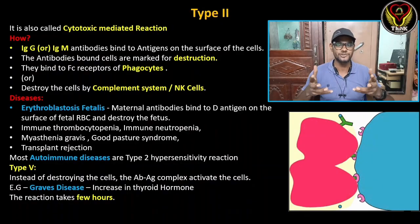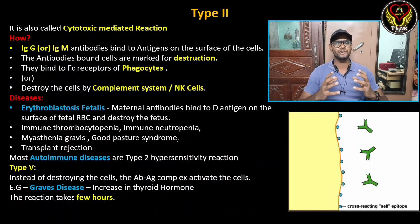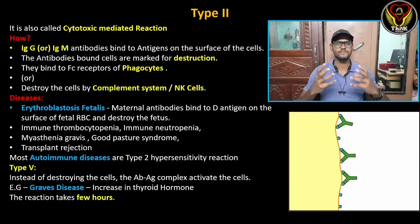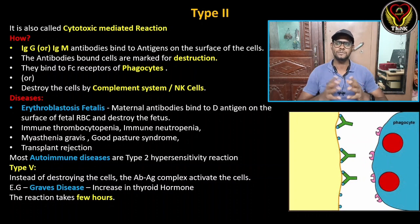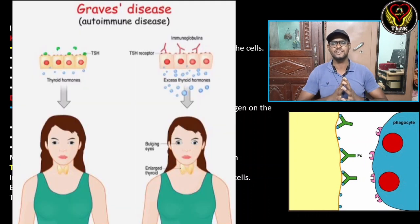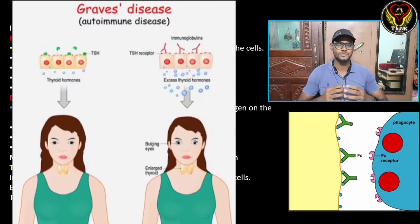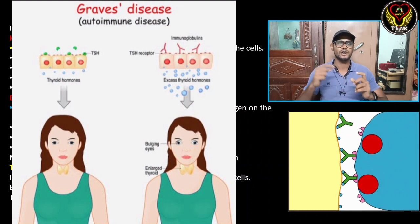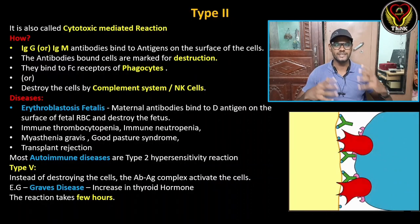We are going to stimulate it. What we do is activate the hormonal imbalance. For example, Graves' disease. We act as a TSH receptor — that is also a binder.